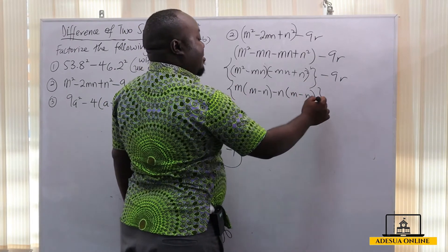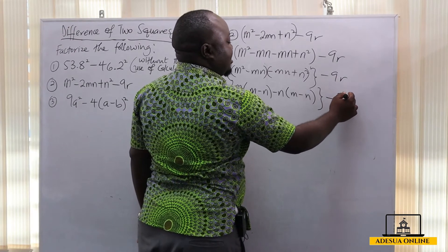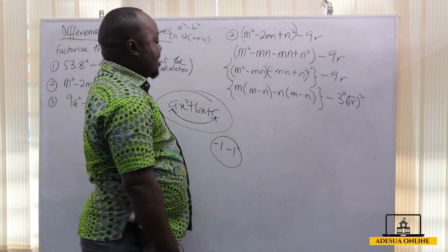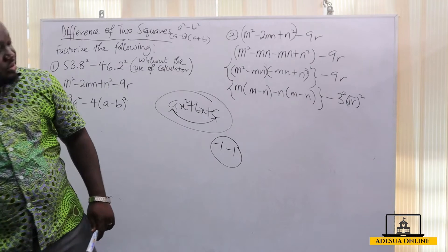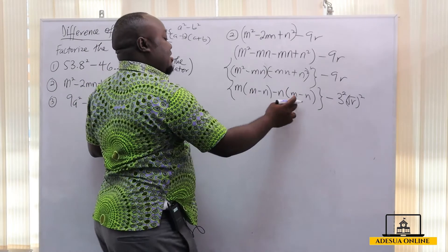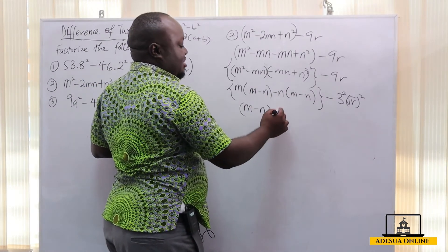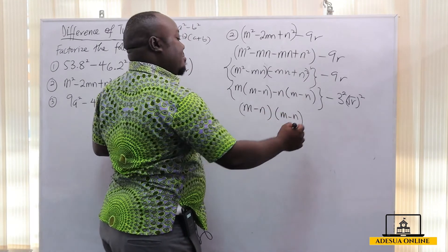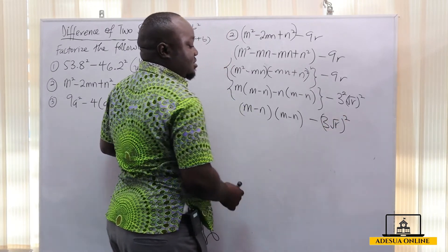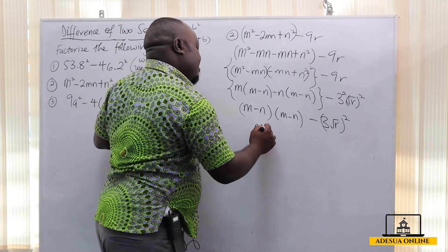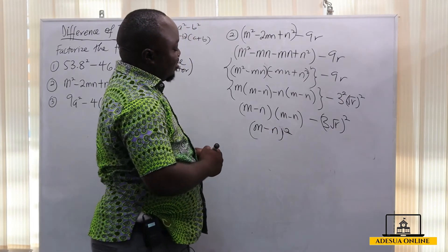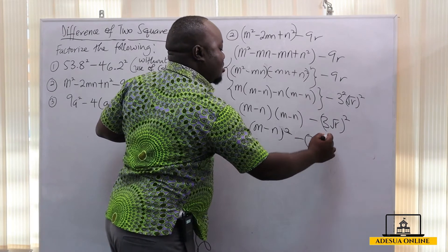This gives us (m - n)(m - n), because m minus n appears twice. So we have (m - n)² minus 9r². Now 9r² can be represented as (3√r)² — that is, 3 squared times square root of r, all squared. So this gives us (m - n)² minus (3√r)², which is the difference of two squares.